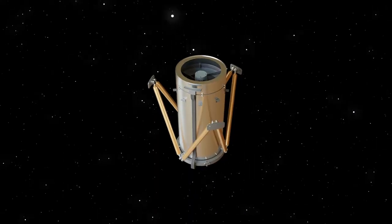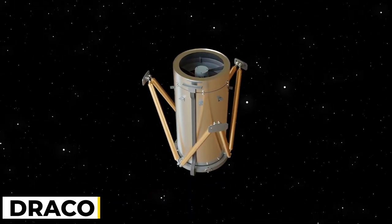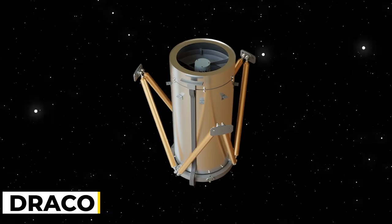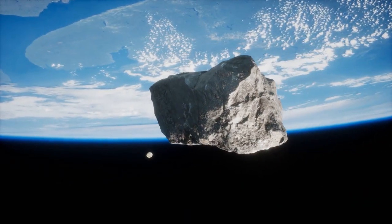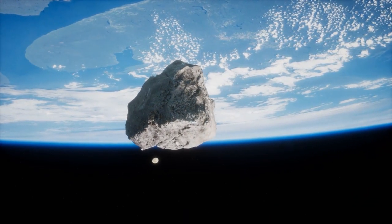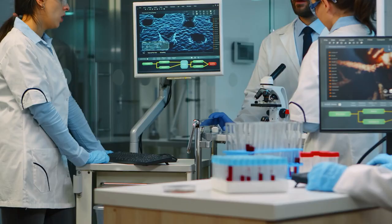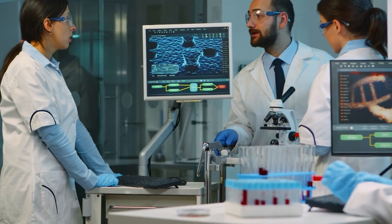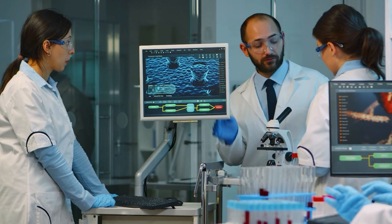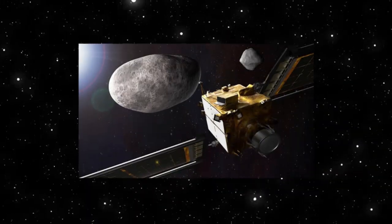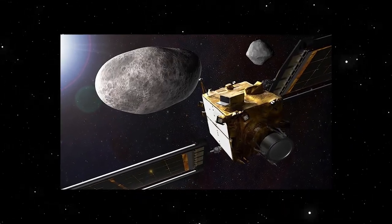An onboard high-resolution camera called Draco assisted in guiding the DART mission as it approached its target and took measurements of the asteroid, including the size and shape of Dimorphos. Based on the LORRI camera from NASA's New Horizons mission, Draco was developed. On September 26 at 7:14 p.m. Eastern Time, DART hit Dimorphos successfully.